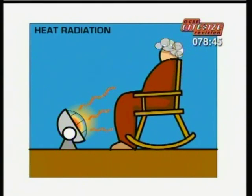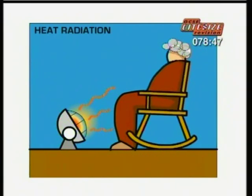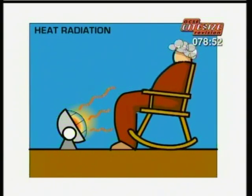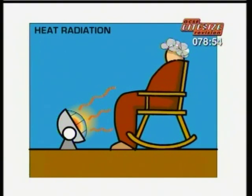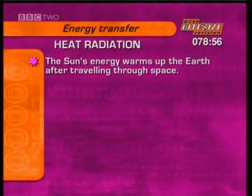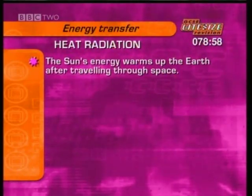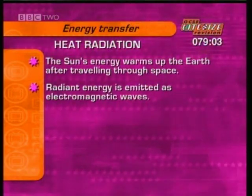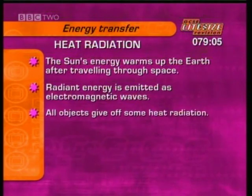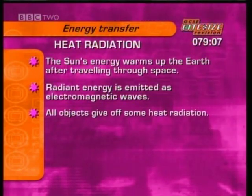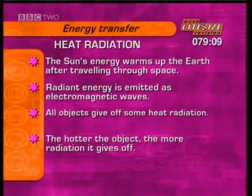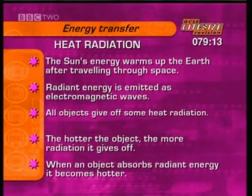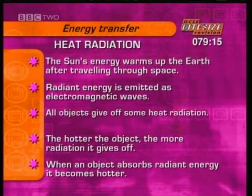Radiation is the transfer of energy through empty space. Radiation doesn't need any material to travel through — it can travel through a vacuum. The sun's energy warms the earth after travelling through space. Radiant energy, or infrared, is emitted as electromagnetic waves from objects. All objects give off some heat radiation, and the hotter the object, the more heat radiation it gives off. When an object absorbs radiant energy, it becomes hotter.